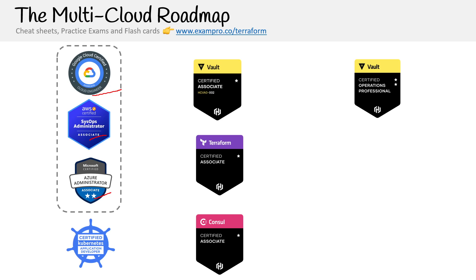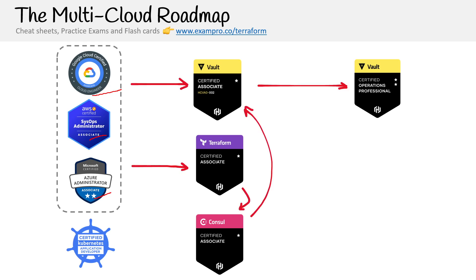There are a lot of different paths for multi-cloud. You can go from associate to Vault and then to the Vault professional if you're looking at a security background, but it's very common for people to get the Terraform certification and then go for Vault afterwards. It's up to you which path you want to take.